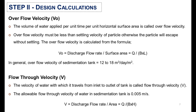In step 2, we calculate the overflow velocity, which is the volume of water applied per unit time per unit horizontal surface. Overflow velocity must be less than the settling velocity of the particle; otherwise, the particle will escape without settling, resulting in very low efficiency of the sedimentation tank. It is calculated by this formula and generally ranges from 12 to 18 cubic meters per day per square meter.